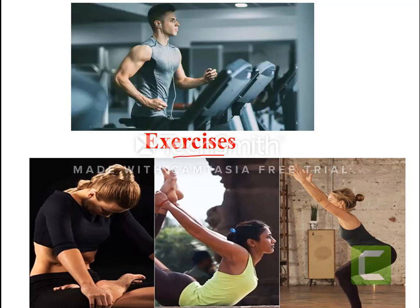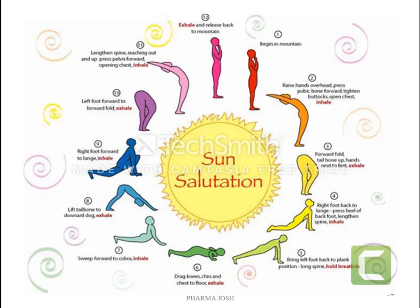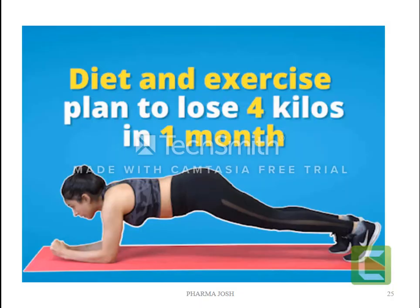Exercise is another important factor. If we do regular walking and basic exercise, chances of our obesity or weight being decreased are there. Surya Namaskar — that means sun salutation — is another most important exercise for reducing our weight. Diet and exercise together plan to lose 4 kilos in one month. Both are ideal for losing weight, that means decreasing our weight or reducing obesity.